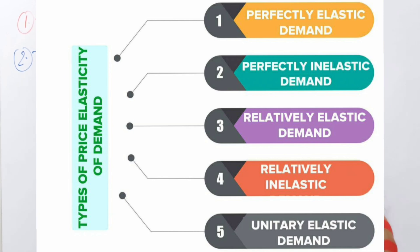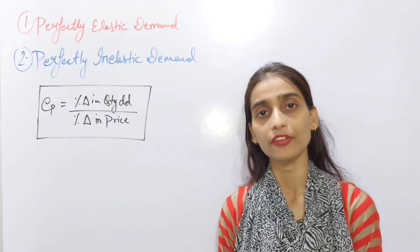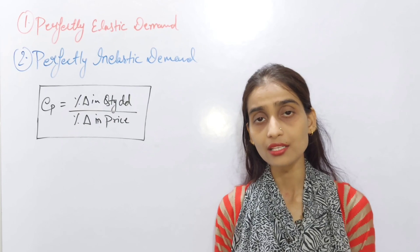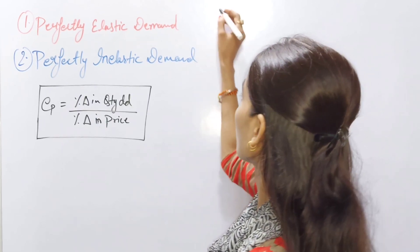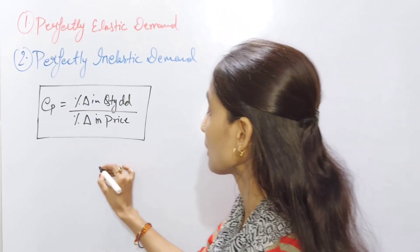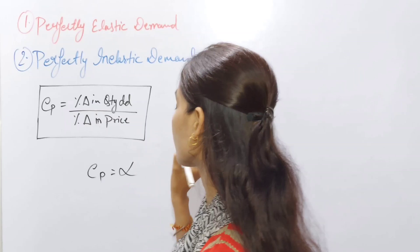The first one is perfectly elastic demand. The numerical value of perfectly elastic demand is infinity. So we can write EP equals to infinity.